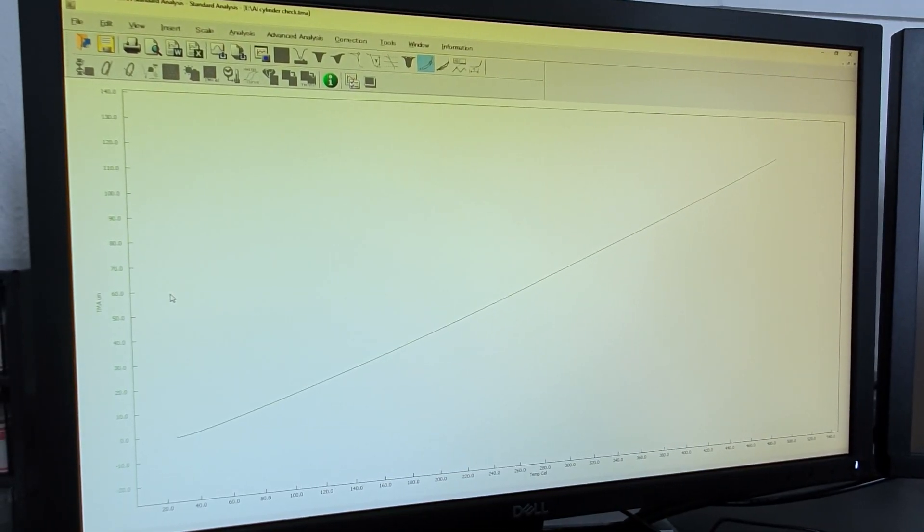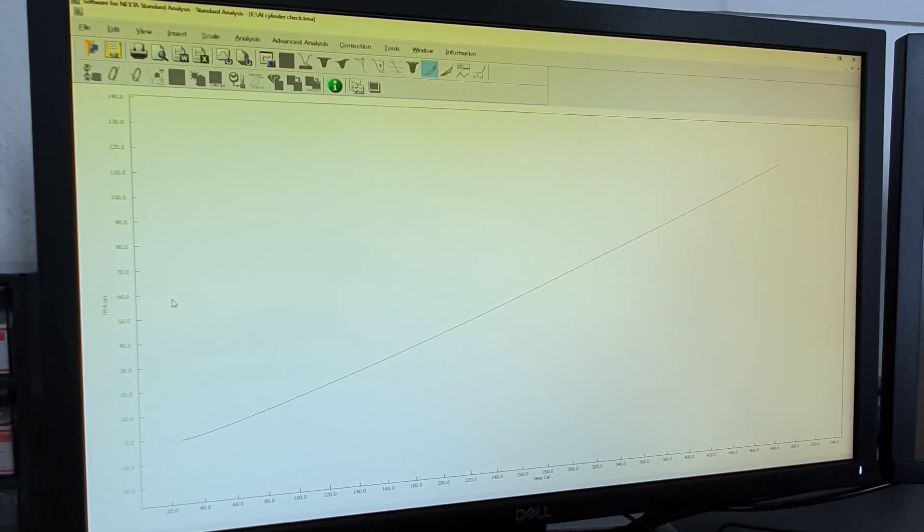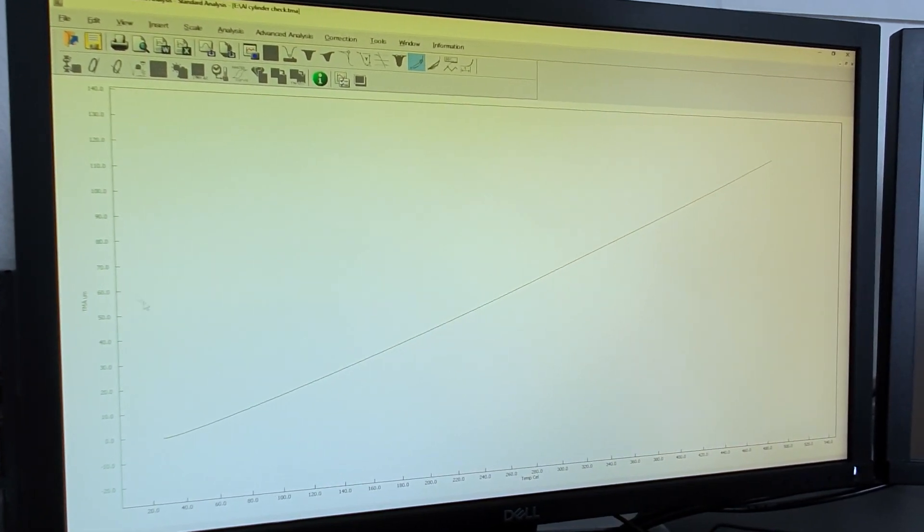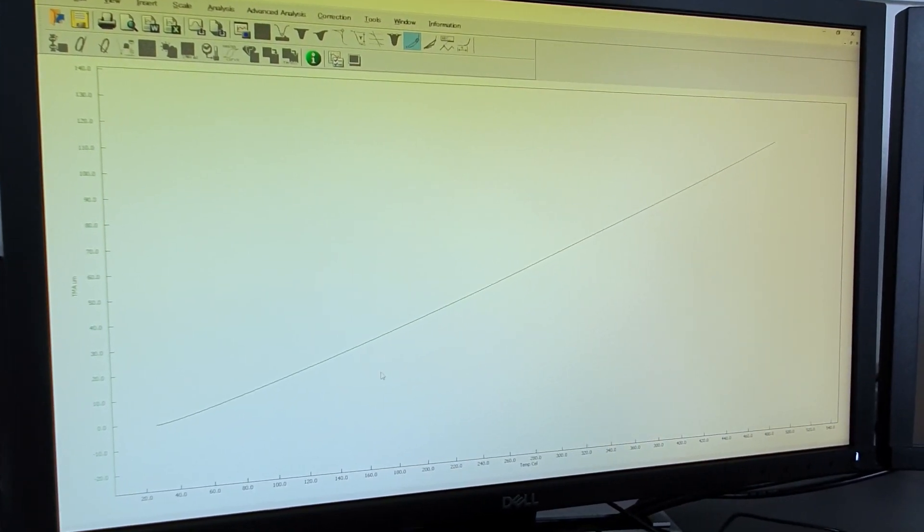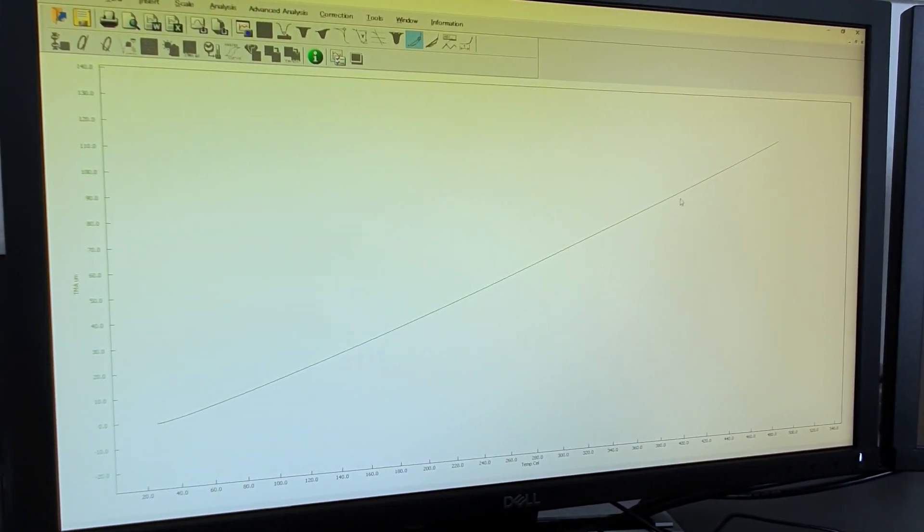Here you can see typical TMA data in our software. On the y-axis you see the TMA data, and on the x-axis you see the temperature. As with rising temperature, you can see that the sample itself expands.